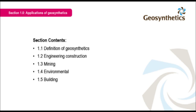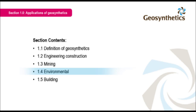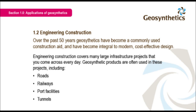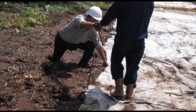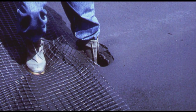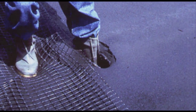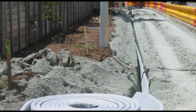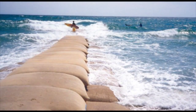Having defined geosynthetics, we can now look at where a civil engineer would use them, starting with Engineering Construction — essentially the transport infrastructure projects used to move people or goods around, such as roads, railways, ports, and tunnels. Geosynthetics assist engineers in managing the performance of soils, such as building a road over swampy ground. They can also help engineers control the influence of water, so that a structure performs as designed for as long as possible, such as keeping water out of the soils under a road so the backfill layers perform to their optimal level.